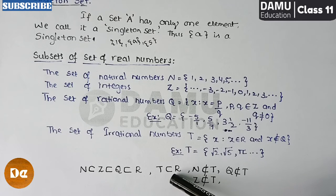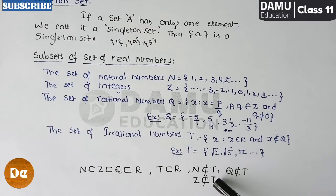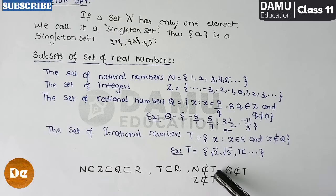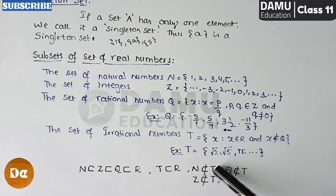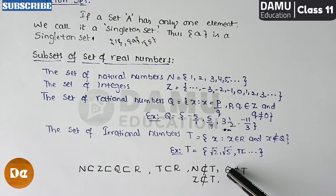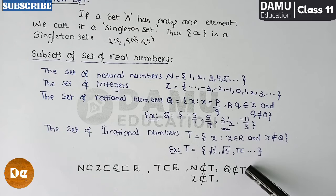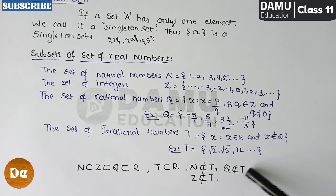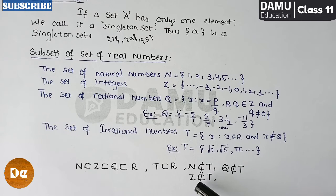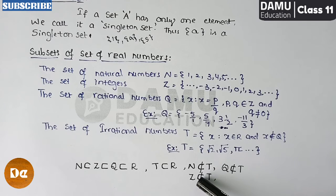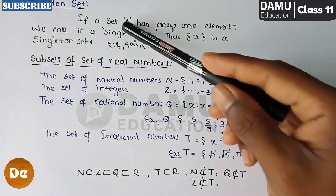T (irrational numbers) is also a subset of R (real numbers). Now for what is NOT a subset: natural numbers is not a subset of irrational numbers — not all natural numbers are contained in irrational numbers. Rational numbers Q is not a subset of irrational numbers T, because what is in Q is not in T. Similarly, integers Z is not a subset of T — numbers belonging to Q do not belong to T.